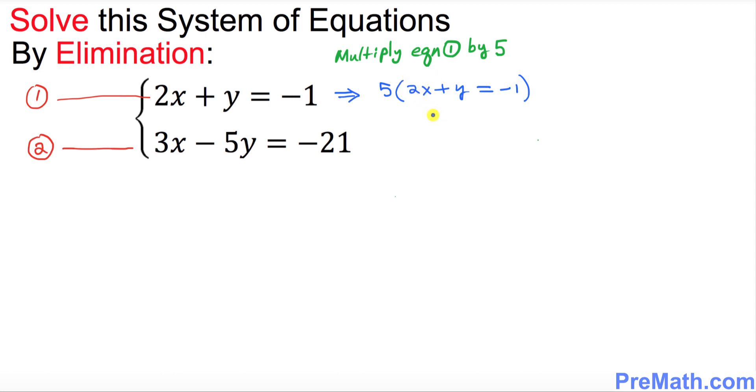So that's going to simply become 10x plus 5y equals negative five. I'm going to call this new equation that we got equation number three.